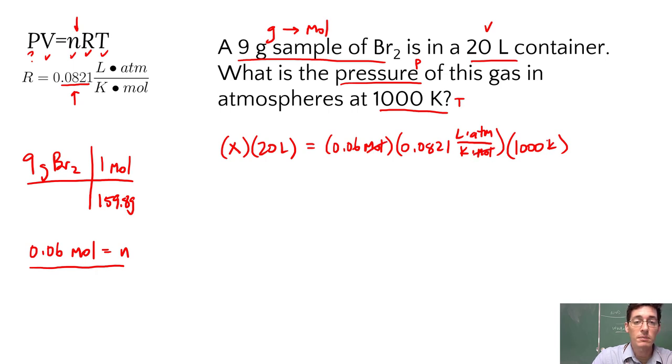Then Kelvin on top here, temperature, cancels with Kelvin on the bottom there for temperature. So if we calculate through, we still have X times 20 liters equals 0.06 times 0.0821. 0.06 times 0.0821 times 1000 gives me 4.93, and this is liter atmospheres.